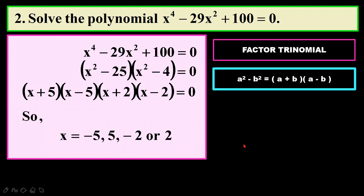I can solve this: x plus 5 equals to 0 gives x equals to negative 5, and so on. I will not bore you with all the working since I showed you once already. Just take each bracket equals to 0, one by one, and you will get the answer out.